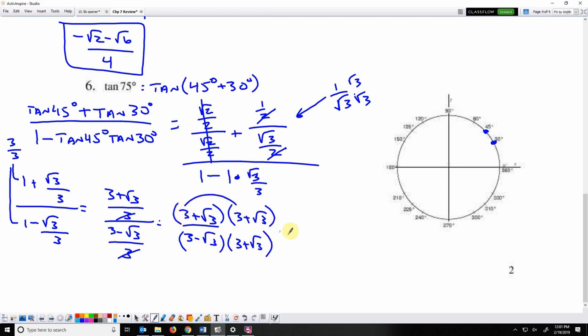So I'll have 9 plus 3 root 3 plus 3 root 3 is plus 6 root 3 plus 3. Then in the bottom, I've got 9 plus 3 root 3 minus 3 root 3. Those will cancel. And then minus 3.